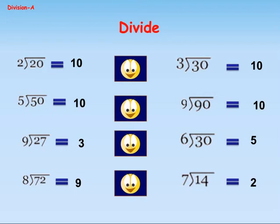27 divided by 9 equals 3. 30 divided by 6 equals 5. 72 divided by 8 equals 9. 14 divided by 7 equals 2.